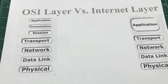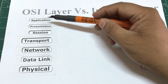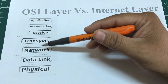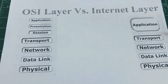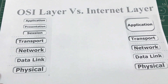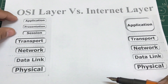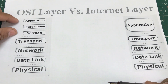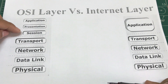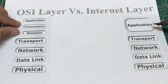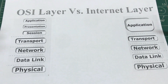The OSI layer is a seven-layer model which comprises the application layer, presentation, session, transport, network, data link, and physical layer. The Internet layer model comprises application, transport, network, data link, and physical layer. The presentation and session layers are combined into a single application layer in the Internet model.